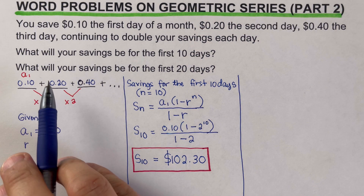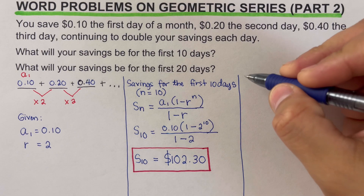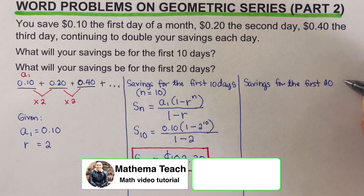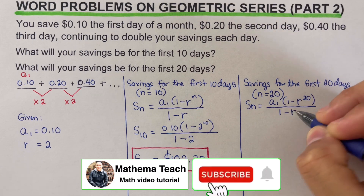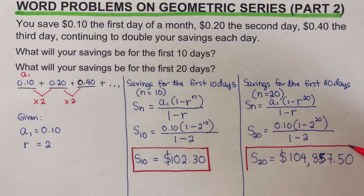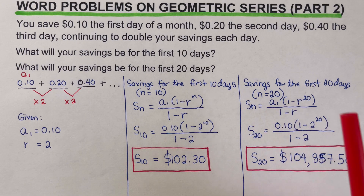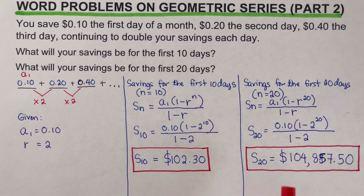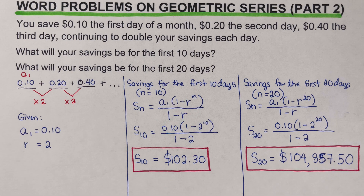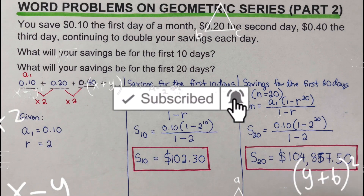Now we move on to the next question: determining the savings for the first 20 days. We plug in n = 20 into the same formula. The savings after 20 days comes out to be $104,857.50. If you find this video helpful, hit like and subscribe for more math videos. See you!